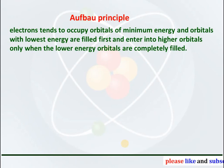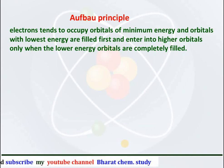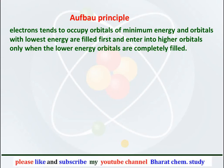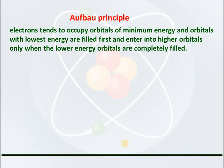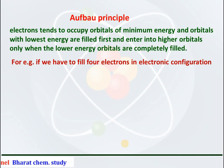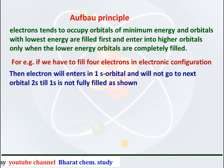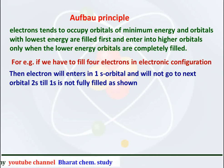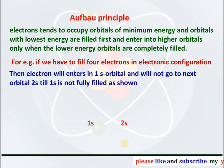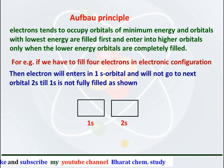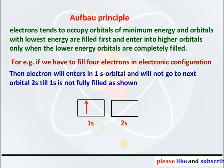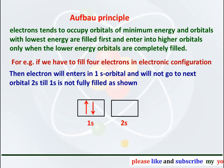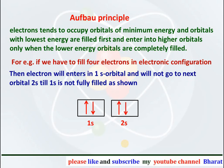The Aufbau principle states that electrons tend to occupy orbitals of minimum energy, and orbitals with lower energy are filled first. An electron enters a higher orbital only when the lower energy orbital is completely filled. For example, if we have to fill four electrons, the electron will enter the 1s orbital first with two electrons, and only when 1s is fully filled will the remaining electrons enter the 2s orbital — and they must have opposite spins.